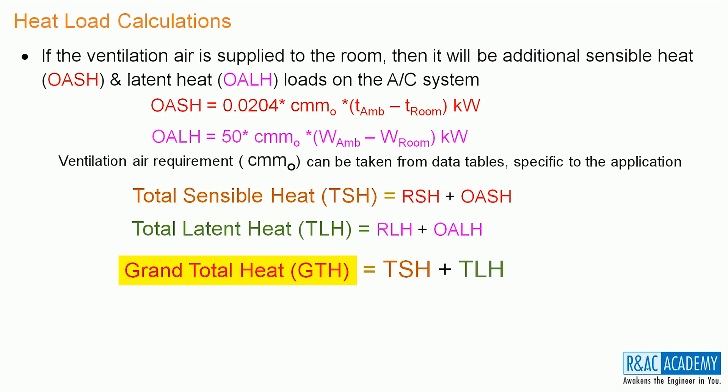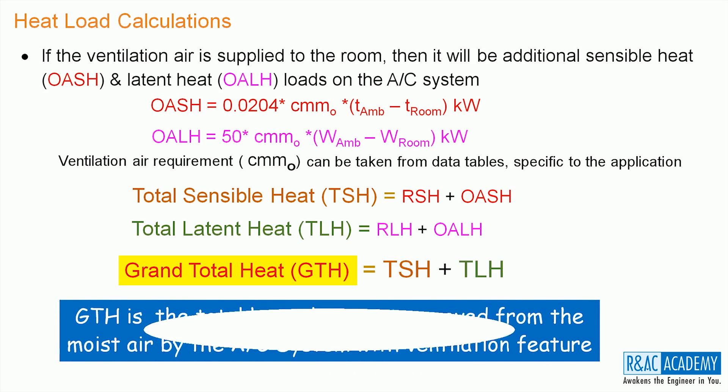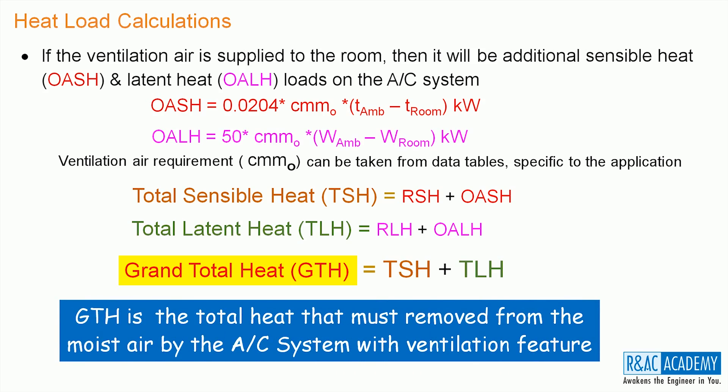What is the significance of GTH? GTH is the total heat that must be removed by the air conditioning system with ventilation feature. Typically, GTH is the minimum cooling capacity required for the central AC system.